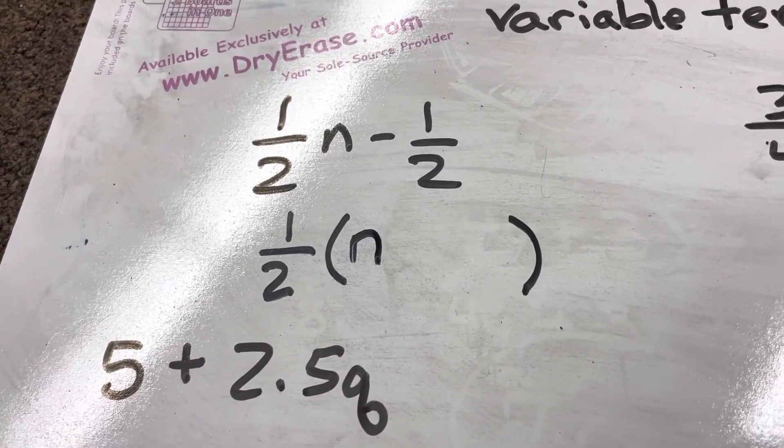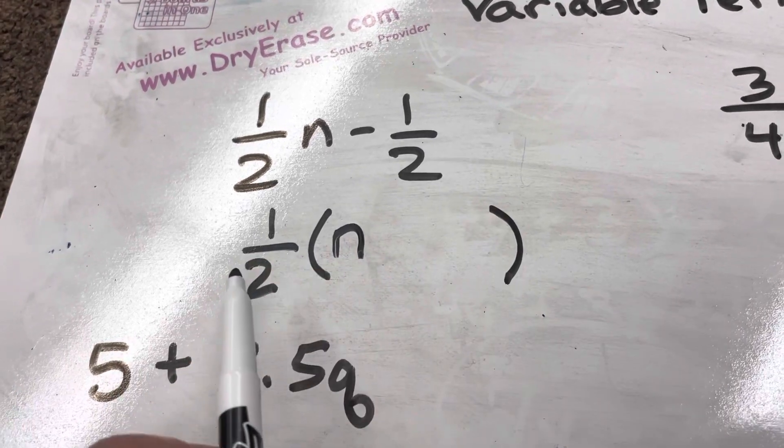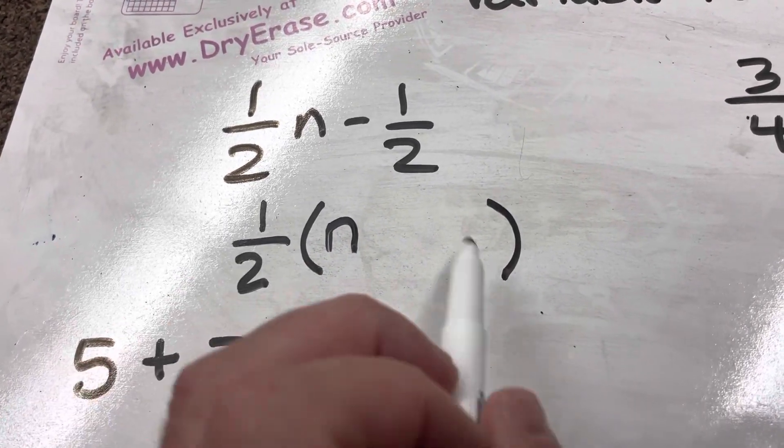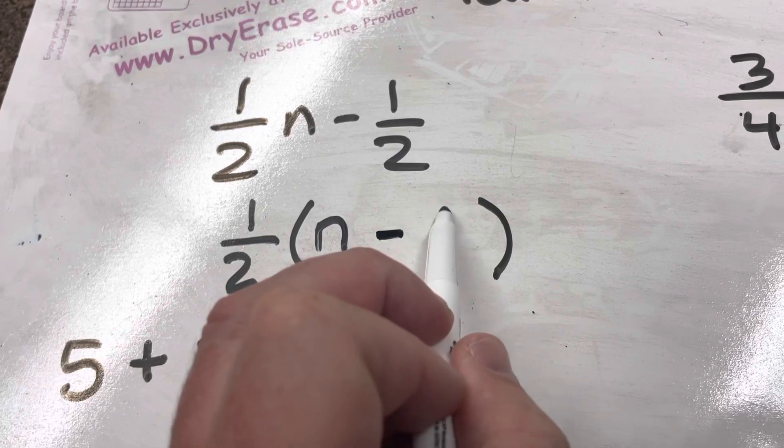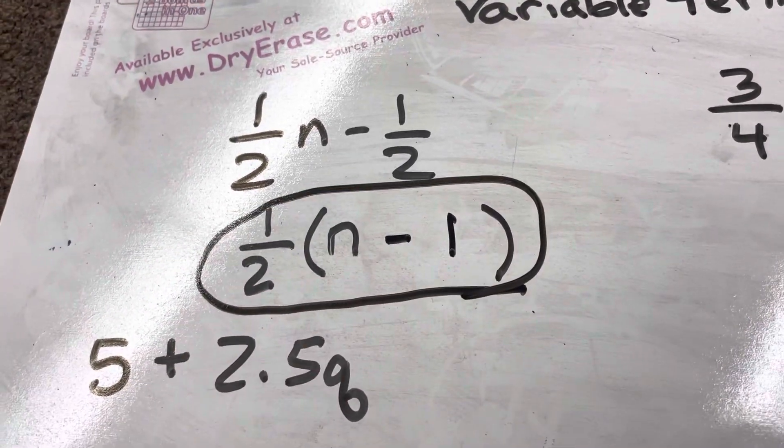Anytime I take a number and divide it by itself, it's going to equal one. So negative one-half divided by one-half is going to be a negative one. And that's my final answer.